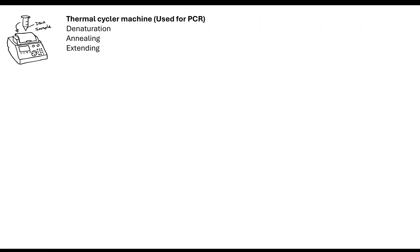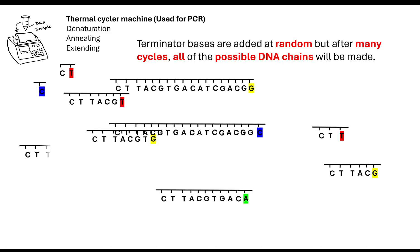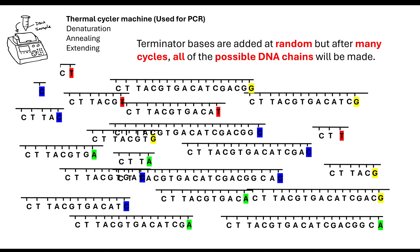Through the thermocycler machine, the terminator bases are added at random. But after many cycles, all of the possible DNA chains will be made. Any time a terminator base forms a hydrogen bond through complementary base pairing, it will terminate the chain — stopping it and producing all these random fragments.